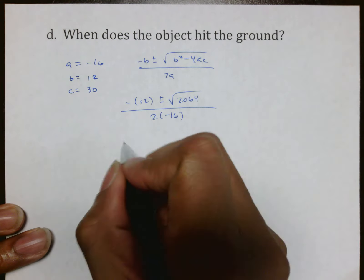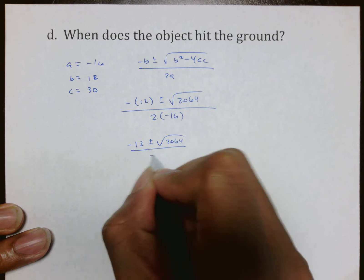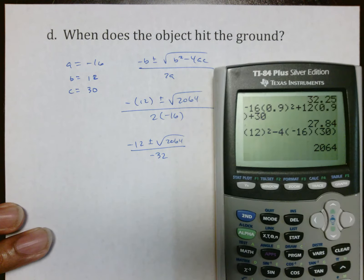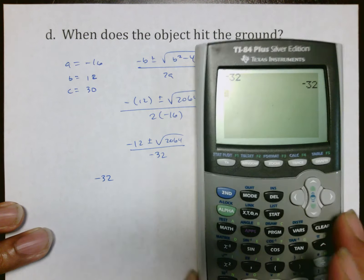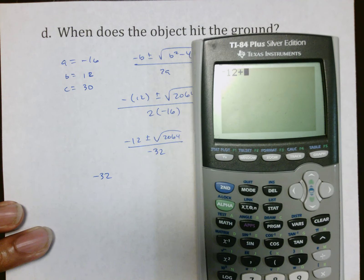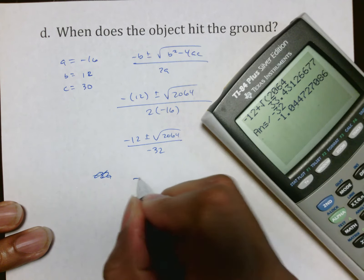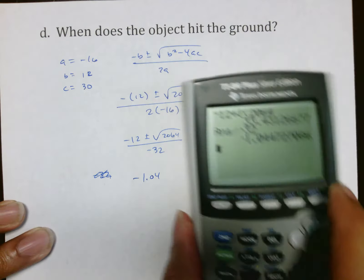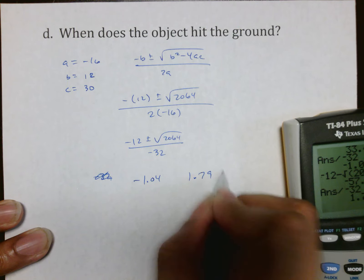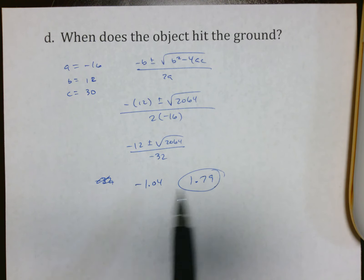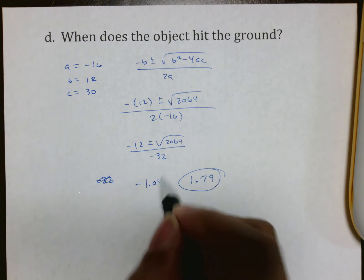Because we're not going to actually try to do this on paper, we actually want a decimal answer. So negative 12 plus square root 2064 divided by negative 32 equals negative 1.04, so that's time before I threw it. And then we want to go back and do negative 12 minus square root of 2064 divided by negative 32 equals, and it says here that it took 1.79 seconds for it to reach the ground. The two times it hit the ground was negative 1.04 and that positive 1.79. This answer makes no sense, the other answer has to be it.